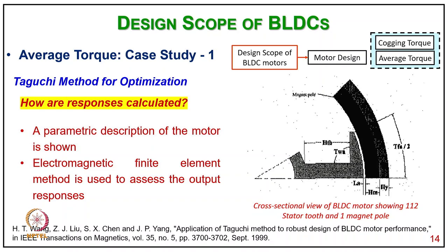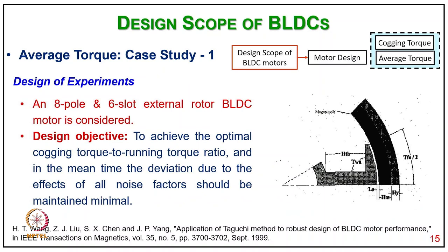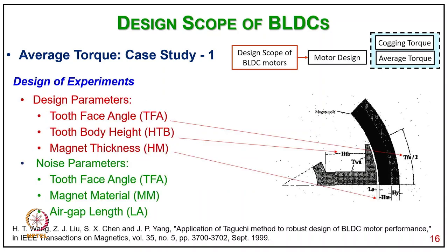A parametric description of the motor is shown, and an electromagnetic finite element method is used to assess the output responses — specifically the cross-section of the BLDC motor showing the stator teeth and magnet port. For the design of experiment, an 8-pole 6-slot axial rotor BLDC motor is considered, with the design objective to achieve the optimal cogging torque to running torque ratio while the variation due to noise factors is maintained minimum. Design parameters include tooth face angle, tooth body height, and magnet thickness; noise parameters include tooth face angle, magnet material, and air gap length.